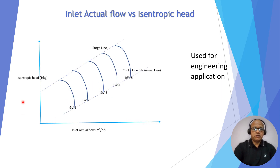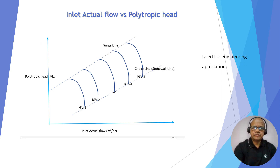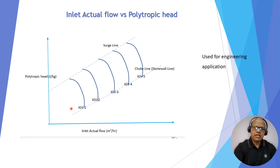This is another curve which uses inlet actual volumetric flow rate in m³/hour on the x-axis and isentropic head in joule per kg on the y-axis. Similar curve, but this is not used for general purpose — it is used only for engineering applications. The inlet actual flow rate versus isentropic head is one form. The same curve can also be expressed using polytropic head, so inlet actual flow in m³/hour on the x-axis and polytropic head in joule per kg on the y-axis.